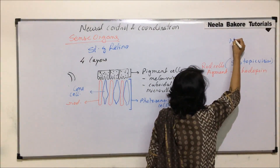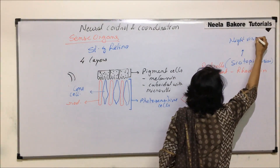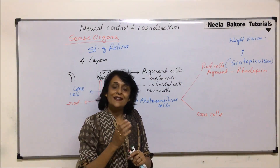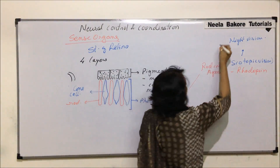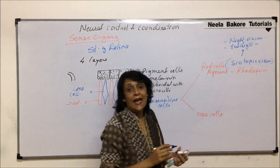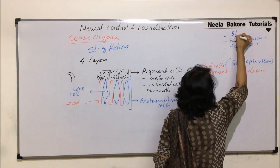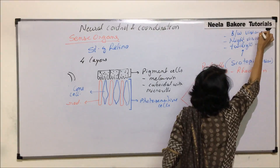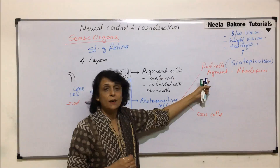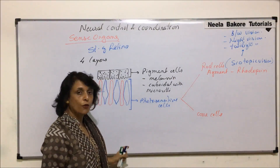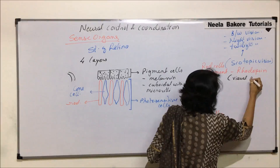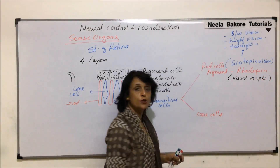Scotopic vision is the term given to vision which helps us see things in dim light — basically night vision. When we use the term night, we are not talking about pitch dark but when the light is slightly less — dim light vision or twilight vision. Rod cells are also responsible for black and white vision. Rhodopsin is also known as visual purple.